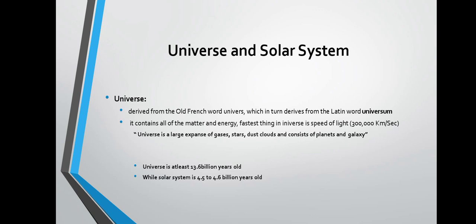The universe is thought to be comprised of three types of substances. The first one is normal matter, the second is dark matter, and the third one is dark energy. Normal matter consists of the atoms that make up stars, planets, human beings, and every other visible object in the universe. All visible material found in this universe is part of normal matter.